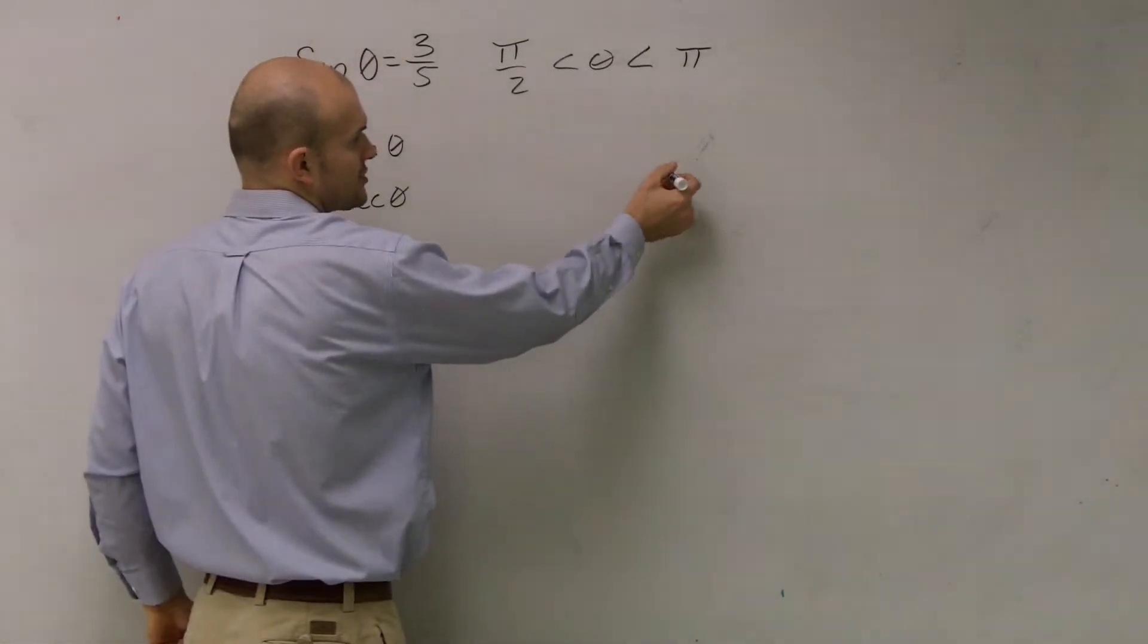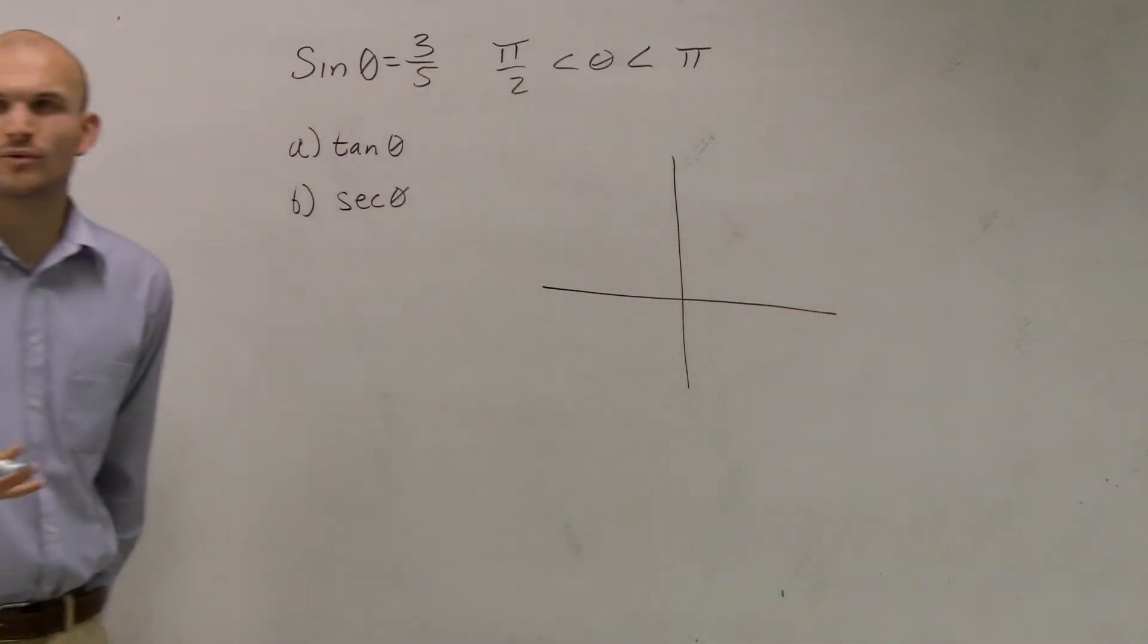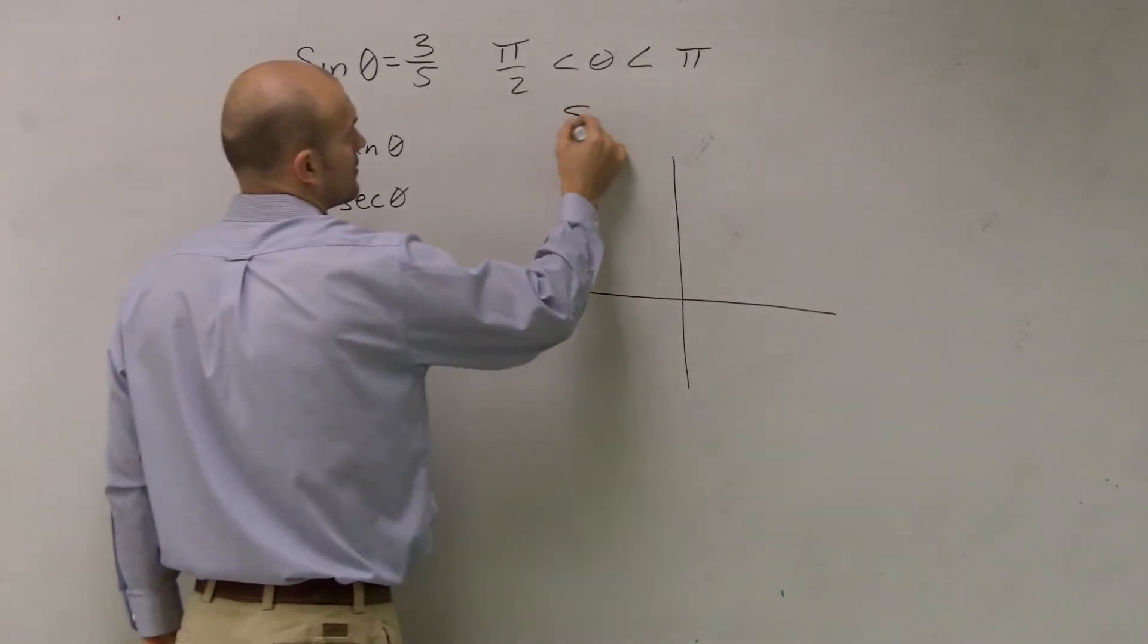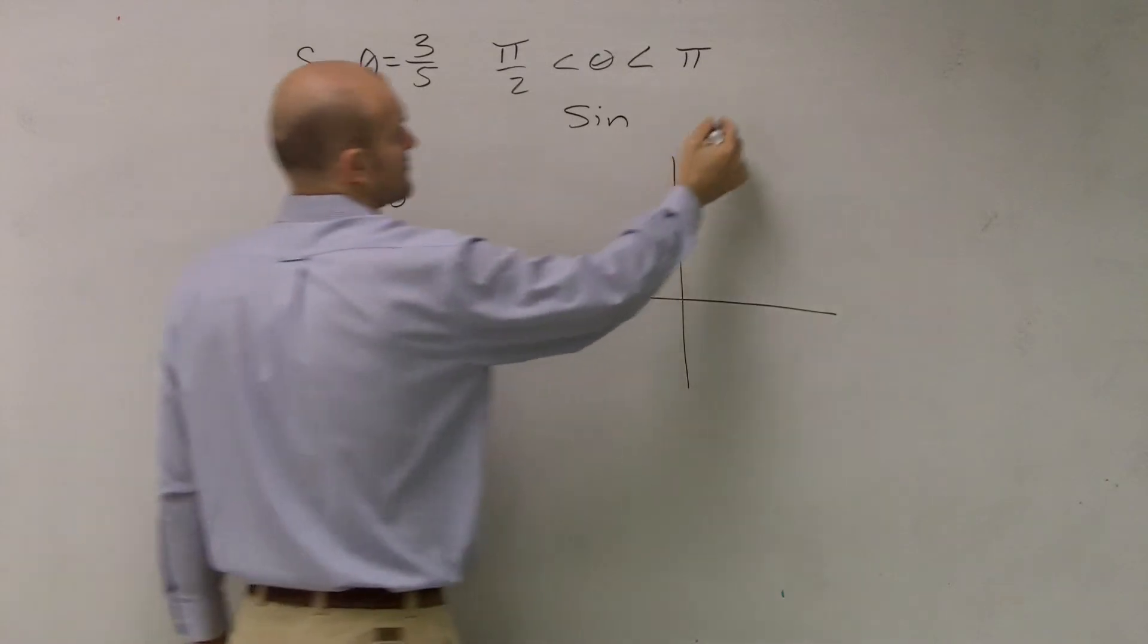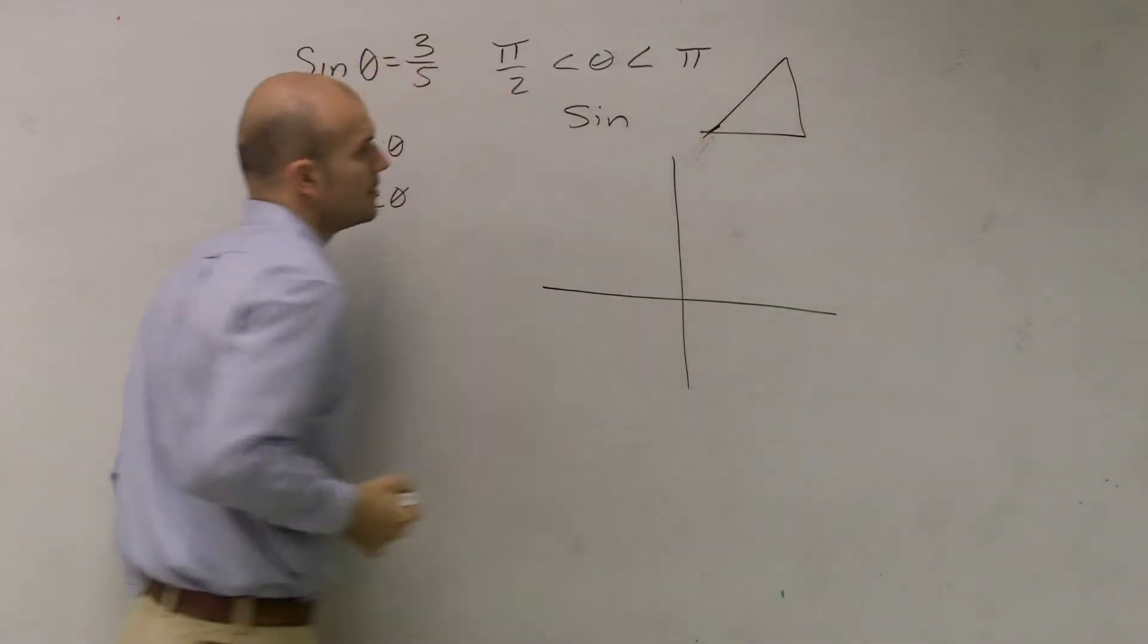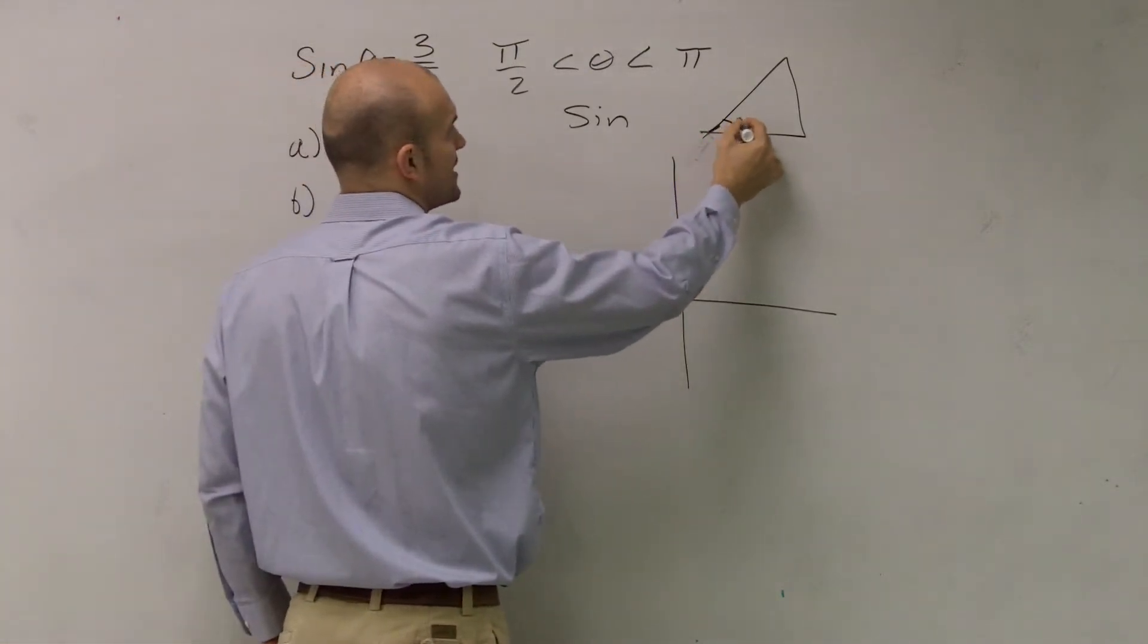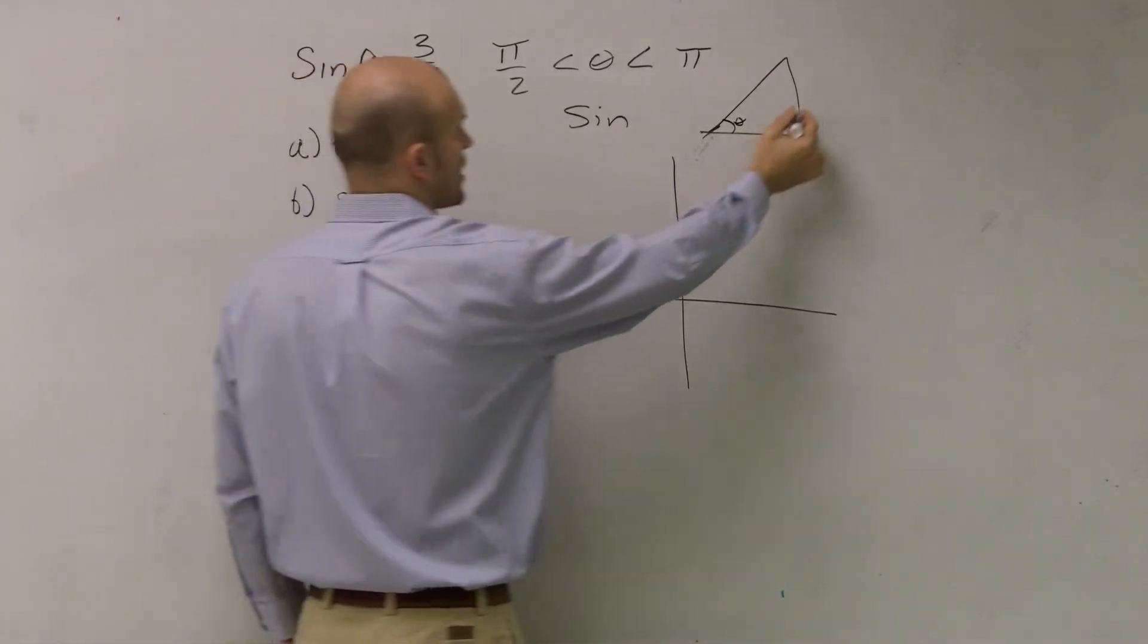And if I was going to, let's say, draw a triangle, we need to first remember what does sin represent? Remember, sin represents, in a right triangle, remember sin. Let's say here's my theta. Sine represents your opposite over your hypotenuse.